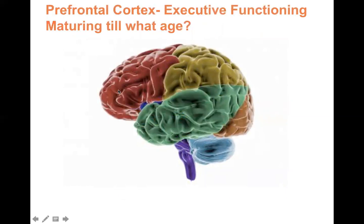The prefrontal cortex — the red part of the brain — doesn't completely mature until 25 years of age. It's constantly in development and still maturing, and it's the one responsible for higher-level thinking. What's interesting is that the majority of these drugs — especially alcohol, marijuana, and central nervous system depressants — actually bring our cognitive levels down and lower IQ levels.